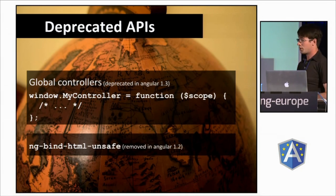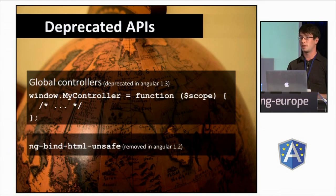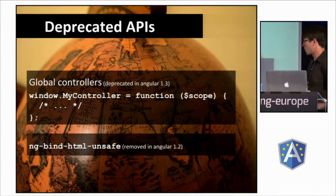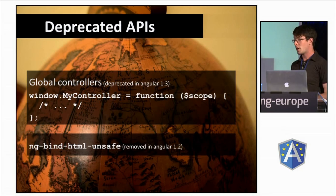Two examples in recent memory: we removed the ability to load controllers that are just globals on window, because that's a bad idea. We also removed ng-bind-html-unsafe — instead, now we have strict contextual escaping with a different API. This is frustrating because if you're reading an old version of the docs, you might try and use that directive and again just have nothing happen. But now you have an opportunity to say 'we removed this API, go look at the change log,' and the user might realize they're looking at the wrong version of the docs.